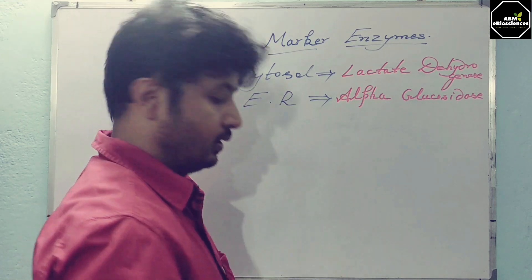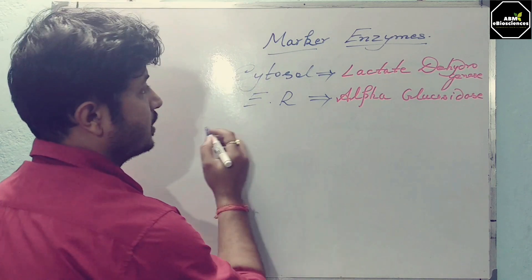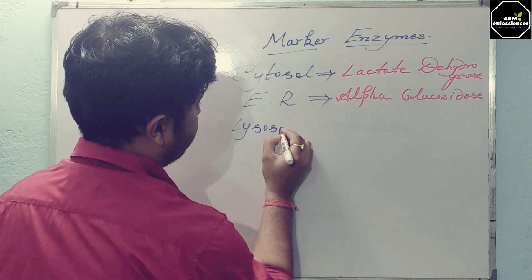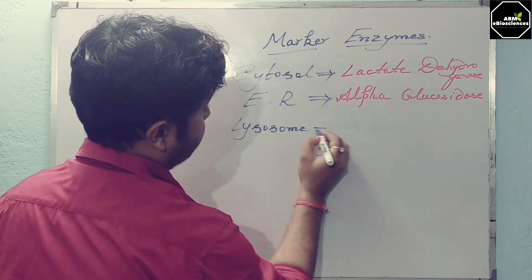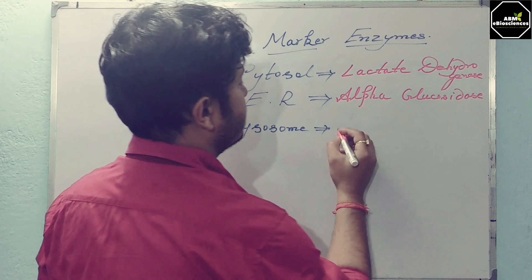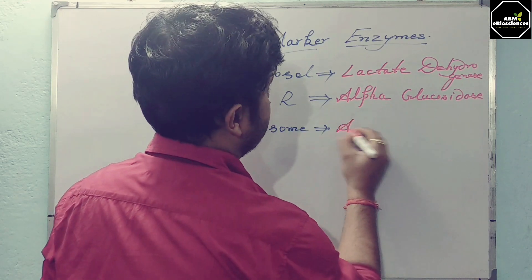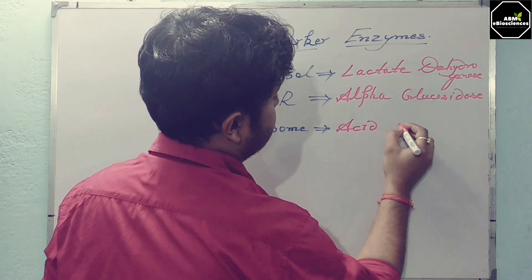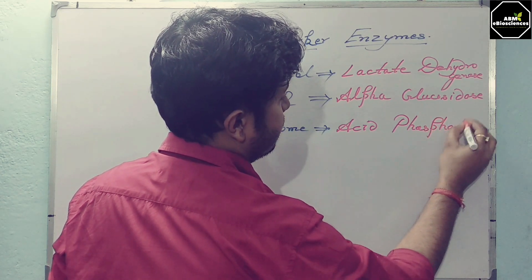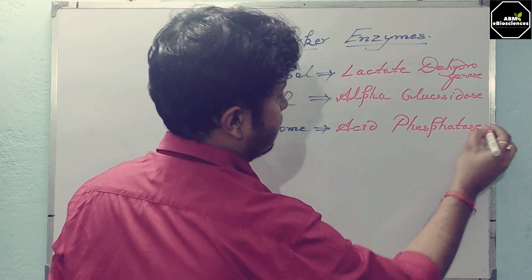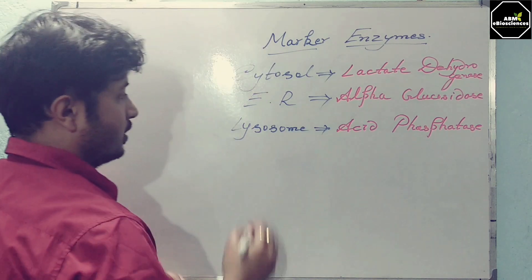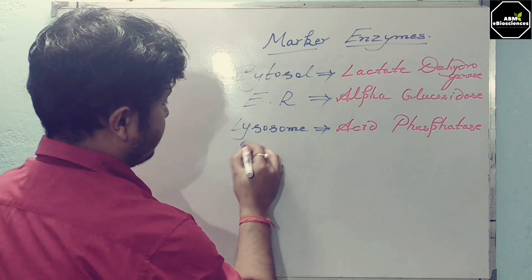The next organelle is the lysosome. For lysosome isolation, you can use acid phosphatase as the specific marker enzyme.